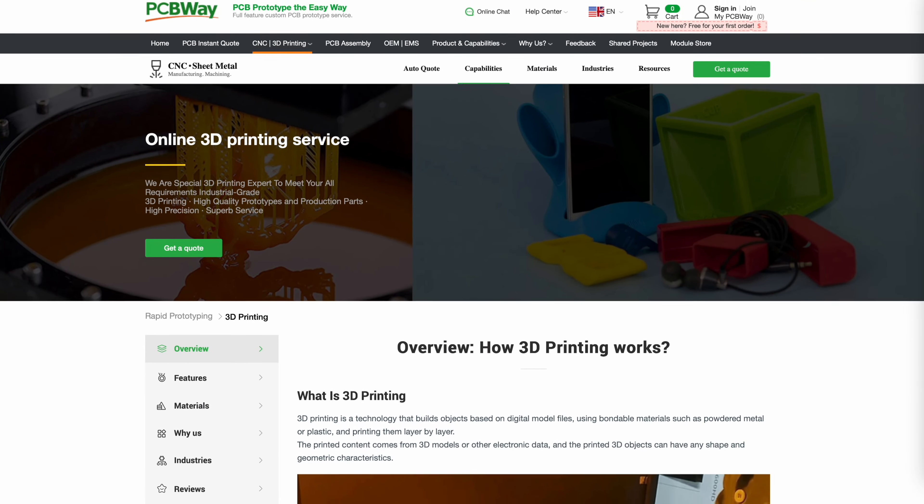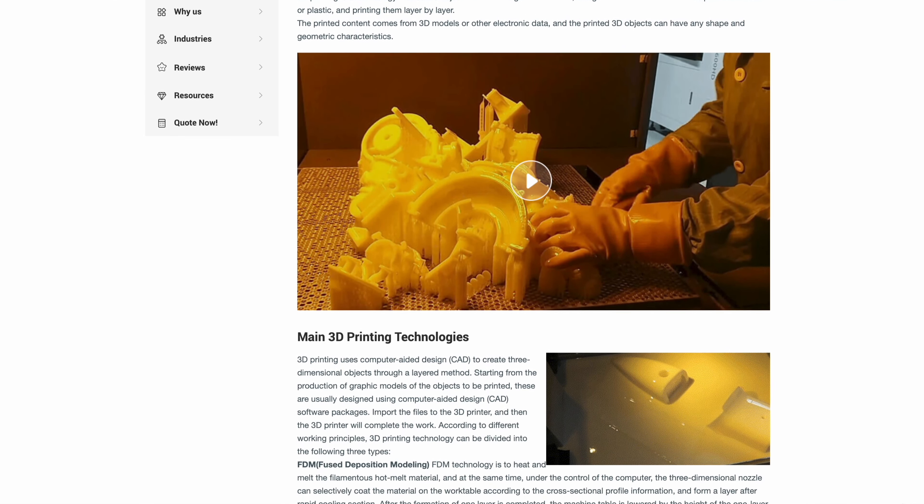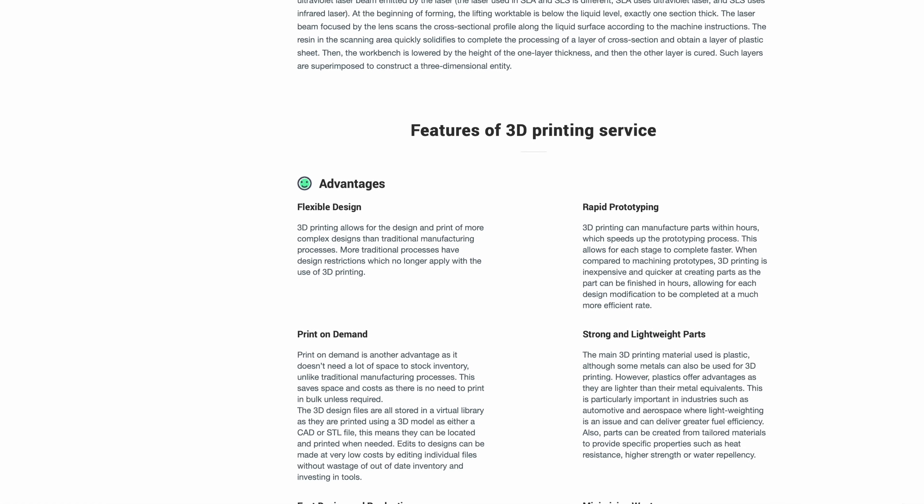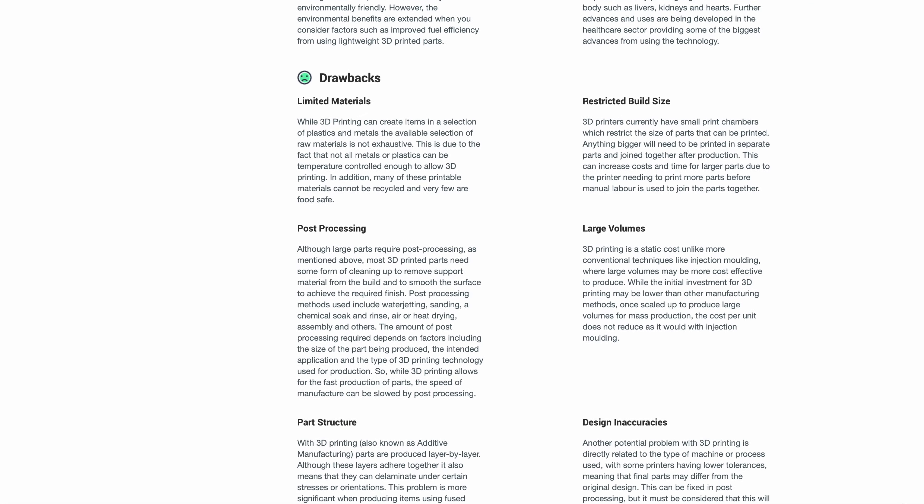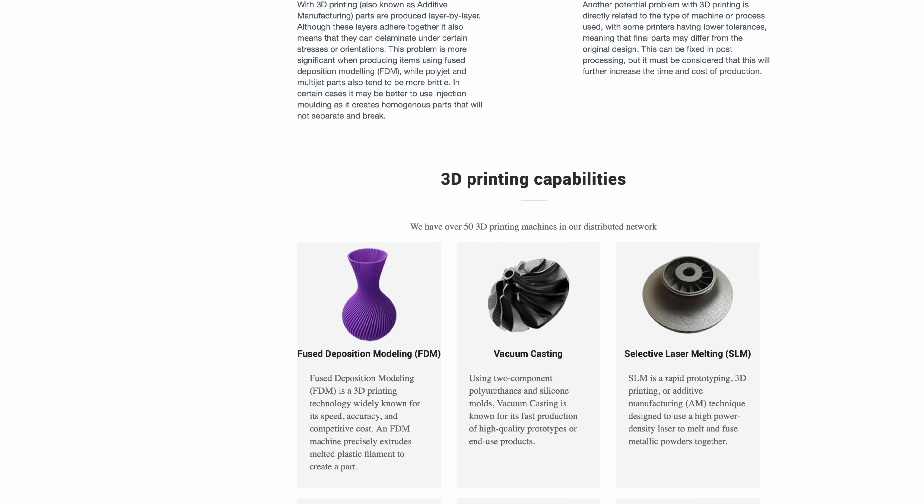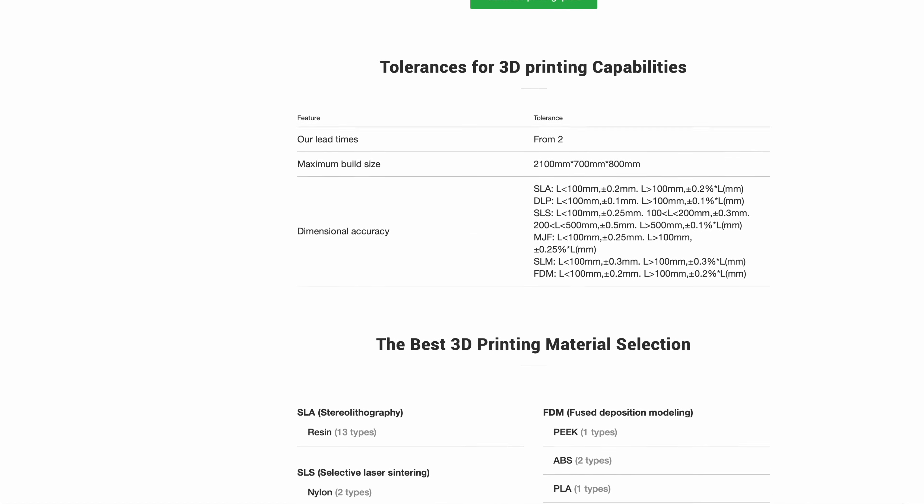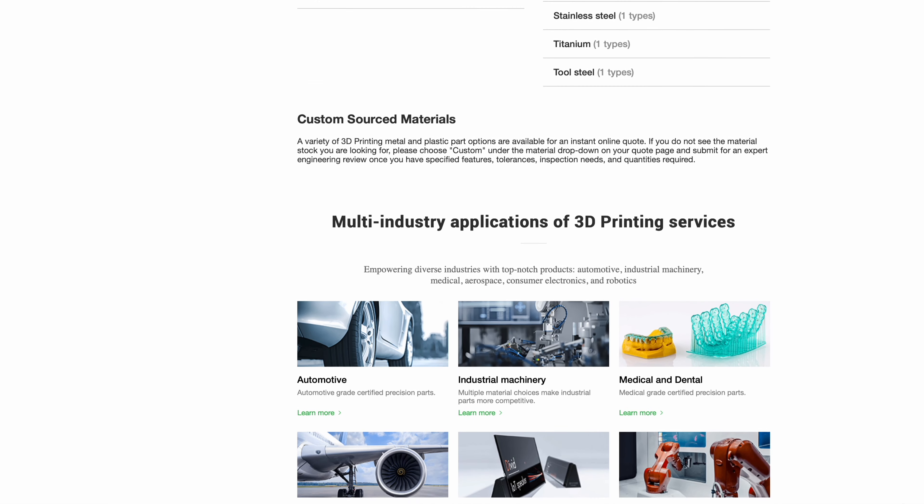This video sponsor PCBWay offers 3D printing services. They offer FDM, SLM, DLP, SLA, and SLS. Materials include plastics and metals, such as aluminum, stainless, titanium, and tool steel. They also offer several post-processes for your part. Their lead time is pretty short. Check them out for your next project. Link in the description below.